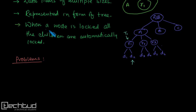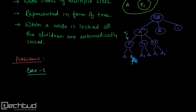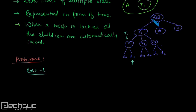When a node is locked, all children are automatically locked. So if I want to acquire a lock on d2, no parent or ancestor should be locked. To lock a lower-level element, we need to start from the root and traverse down to that node, checking whether any node along the path is locked by some other transaction.